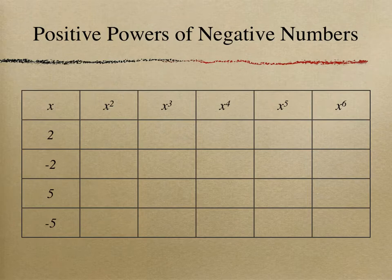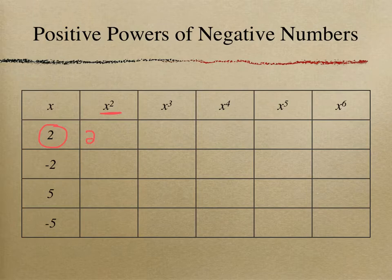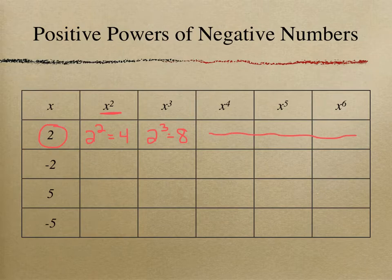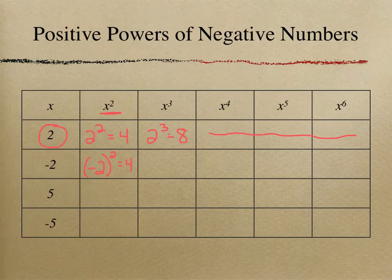Just to get us warmed up, take a second and try to fill in this table. What I'm really asking you to do is, for example, take 2 and raise it to the power of 2 — so 2 squared, which would be 4. Here you're doing 2 to the 3rd power, which would be 8. Then do the same thing in the next row except with a negative number. Remember, in your calculator, if you're going to raise a negative number to a power, it has to be in parentheses. So negative 2 squared should also come out to be 4. Pause the video and see if you can fill in the rest of this table on your own.